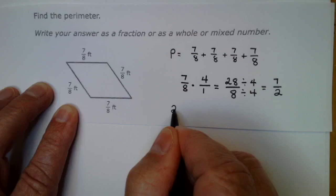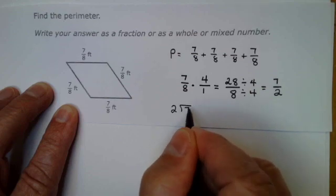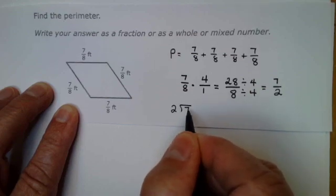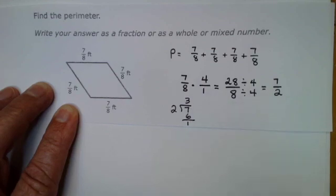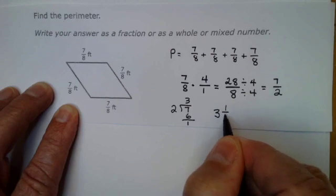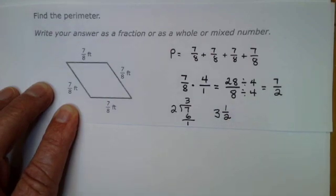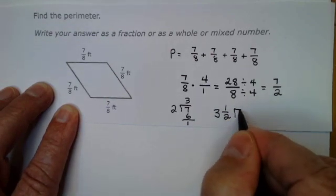Then I take 7 divided by 2. How many times will 2 go into 7? 3 times. Subtract. I have 1 left over. 3 and 1/2. And remember to put my units, feet.